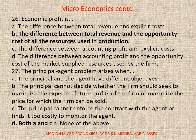Question 27. The principal-agent problem arises when — correct option is D, both A and C, where A. The principal and the agent have different objectives. And C. The principal cannot enforce the contract with the agent or finds it too costly to monitor the agent.